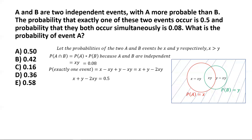We now have two equations in X and Y. Substituting XY = 0.08 into X + Y - 2XY = 0.5, it is straightforward to obtain X plus Y equals 0.66. So we have X + Y = 0.66 and XY = 0.08.